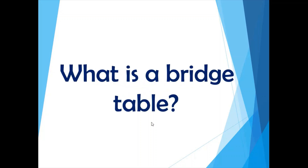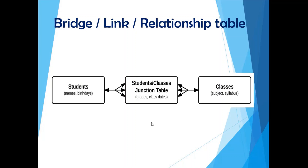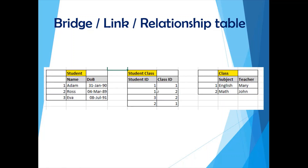Moving on to the next question, which is a follow-up: what is a bridge table? We just saw what a many-to-many relationship is. How do you implement this in a data warehouse design? You need to resolve these relationships by implementing another entity — another table — known as the bridge table, or link table, or relationship table, and capture the relationship between the two original entities in this new table.